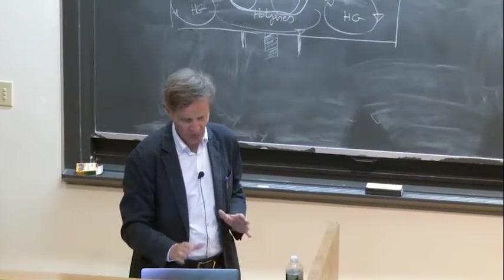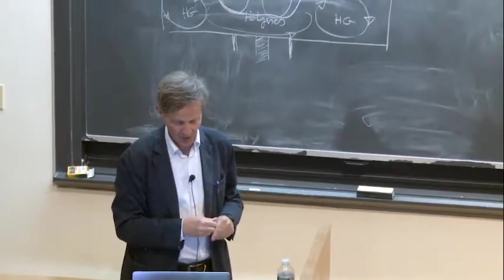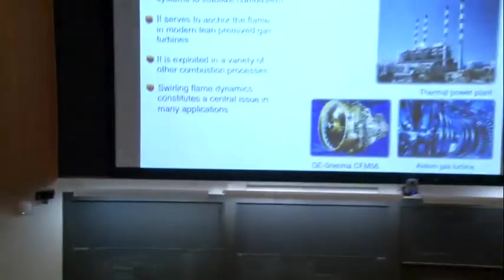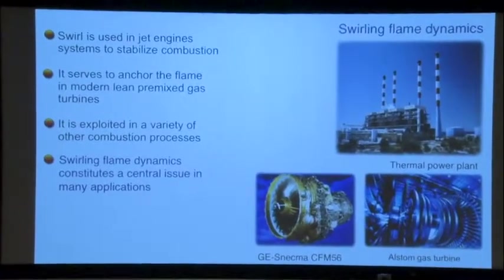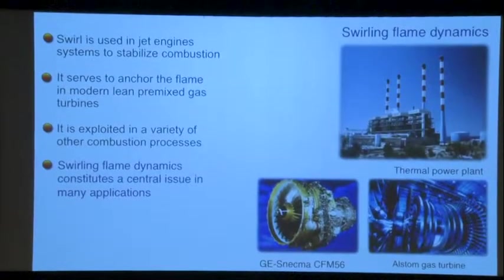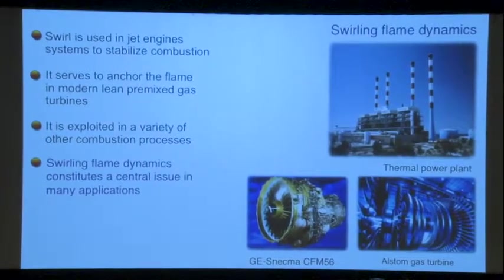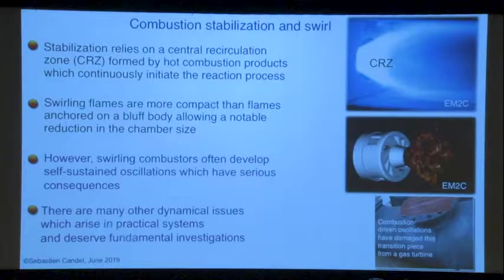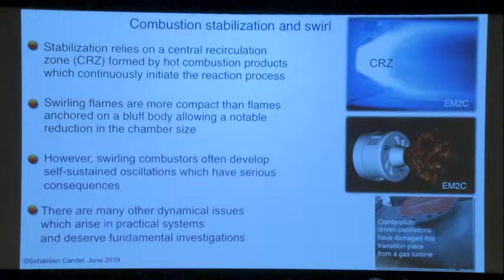Swirl is used in jet engines. It's used in modern lean premixed gas turbines. It is used in various combustion processes to stabilize the flame. Swirling flames are therefore very important, and the dynamics of the swirling flames are important. The stabilization relies on this central recirculation region and also sometimes on outer recirculation.